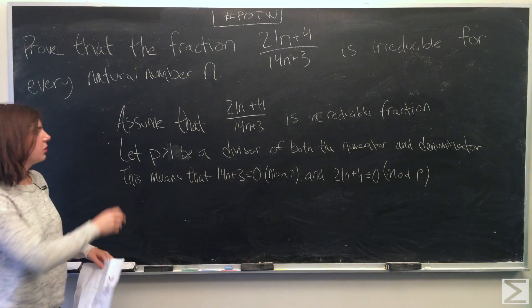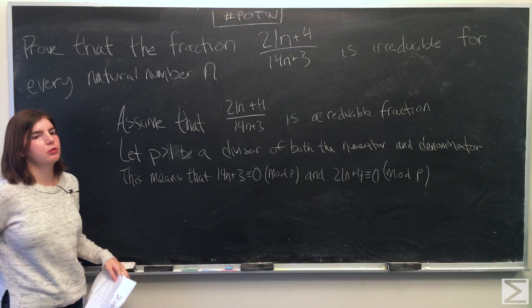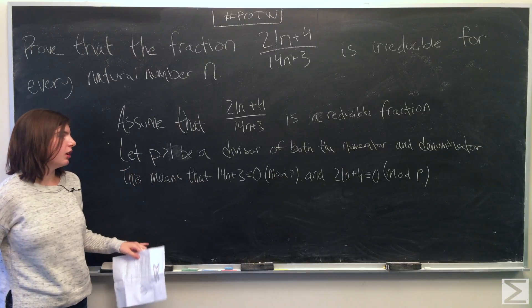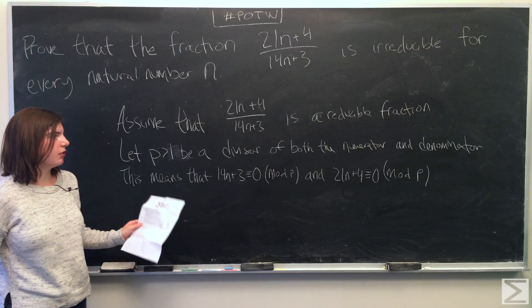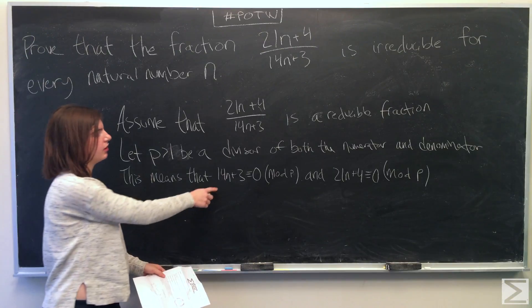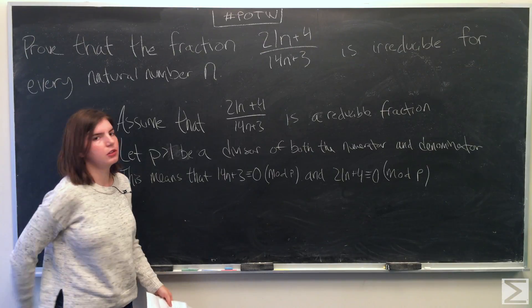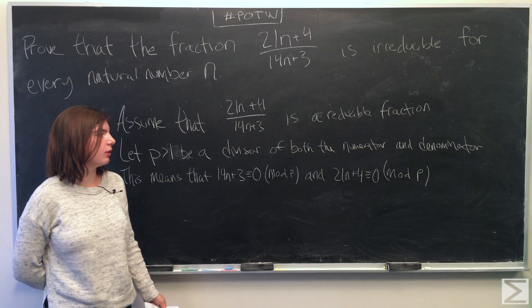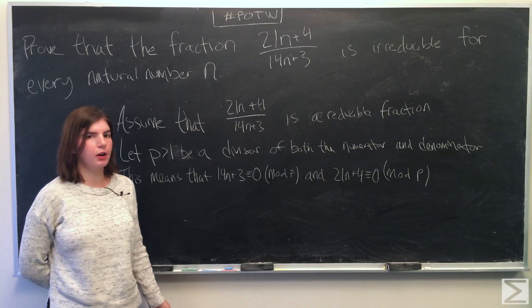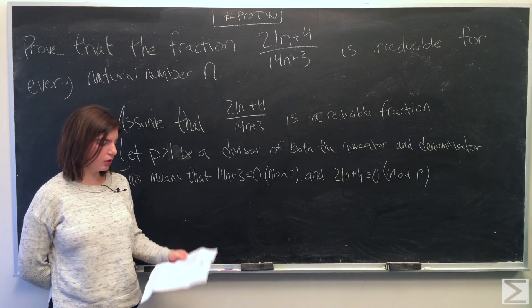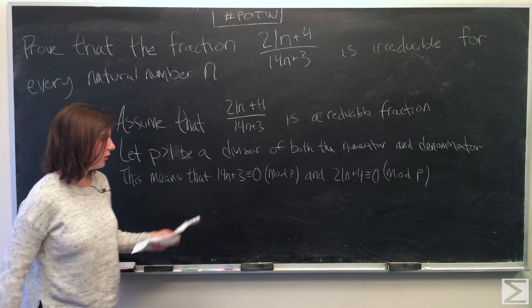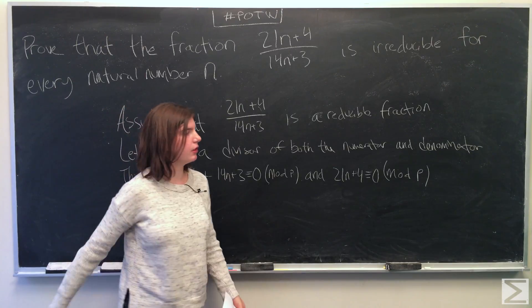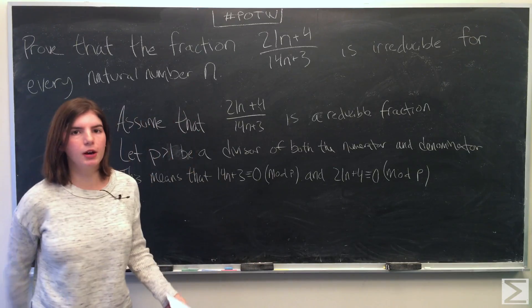We're going to let p be a divisor of both the numerator and denominator, and p is greater than 1. Since it's a divisor, that means that 14n plus 3 is congruent to 0 modulo p, and 21n plus 4 is congruent to 0 modulo p. We're going to multiply the first equation by 3 and the second equation by 2, and you'll see why.